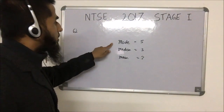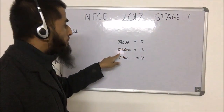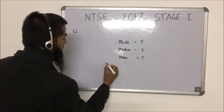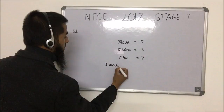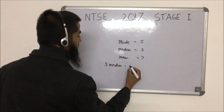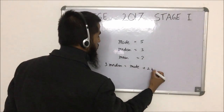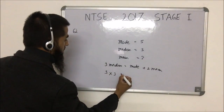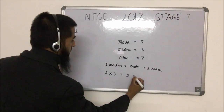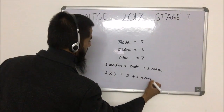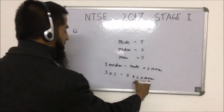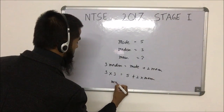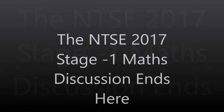This question gives mode = 5 and median = 3, and we need to find the mean. Using the empirical formula: 3 × median = mode + 2 × mean. So 3 × 3 = 5 + 2 × mean, giving 9 − 5 = 2 × mean, so mean = 2.